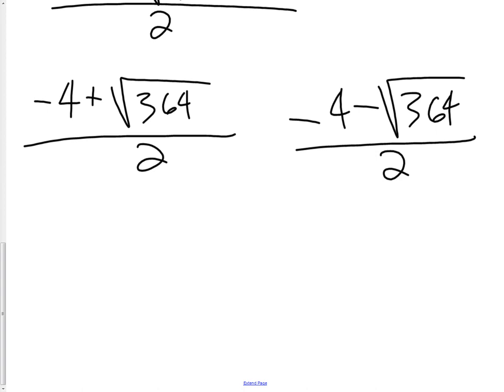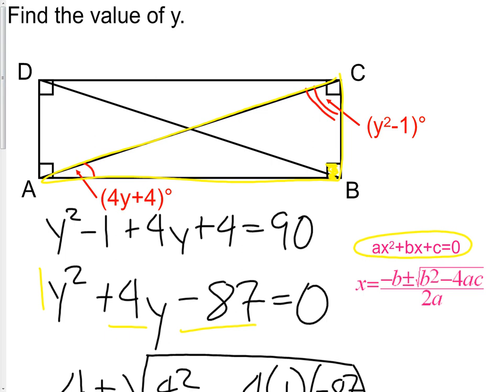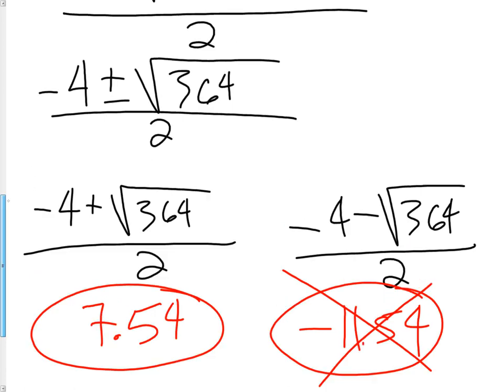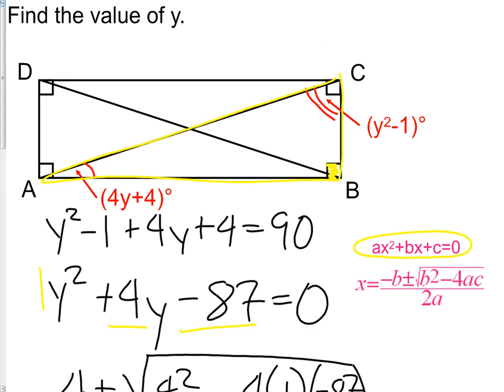By my calculations, my first answer was 7.54, rounded to two decimal places. And my second answer was negative 11.54. Now if we go back to our original equation, we have 4 times Y plus 4. Well, that eliminates this choice because I'm going to get a negative angle there. So I have my final answer of 7.54 for the value of Y. That's what it asks for, is to find the value of Y. And you're done.